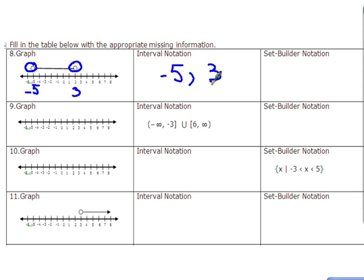Again we will use the same end points minus 5 and 3 and put parentheses around it because that means that number minus 5 and number 3 they are not part of the interval, but anything between those two numbers is.